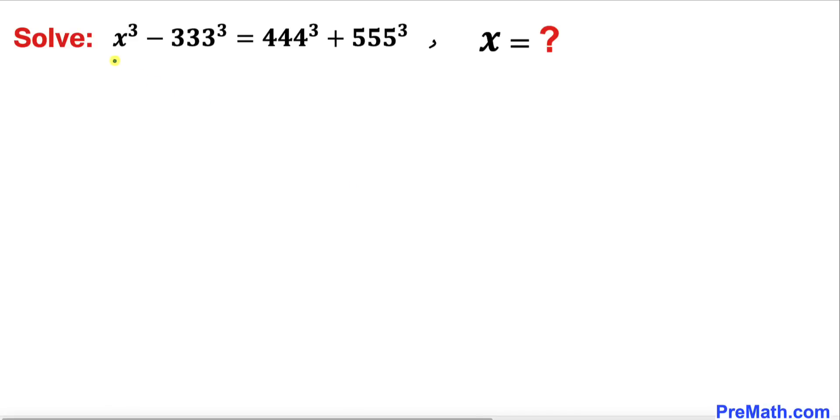Welcome to PreMath. In this video we have got this cubic equation: x³ - 333³ = 444³ + 555³, and now we are going to find the value of x.